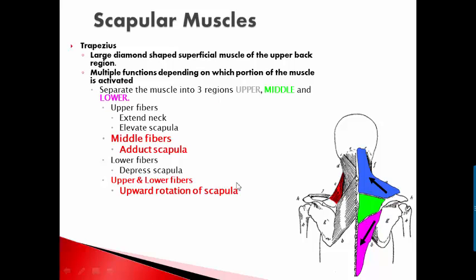Trapezius is a huge diamond-shaped muscle in your upper back, extending from your occipital bone all the way down to your mid thorax. It basically has three regions: upper, middle, and lower. The upper fibers extend the neck and cervical spine and elevate the scapula. The middle fibers adduct or retract the scapula, and the lower fibers can depress the scapula. The upper and lower fibers together — the blue and the purple in the image — create a force couple which results in upward rotation of the scapula.